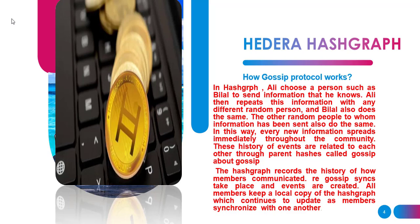Now the question is how the gossip about gossip protocol works. Suppose there is a person named Ali and he randomly sends information to a person named Bilal. Then Ali, after sending information to Bilal, sends that information to any other random person, suppose A. Bilal, who gets information from Ali, also sends information to another random person, Z. So the information continues to spread throughout the community — this is about gossip about gossip.